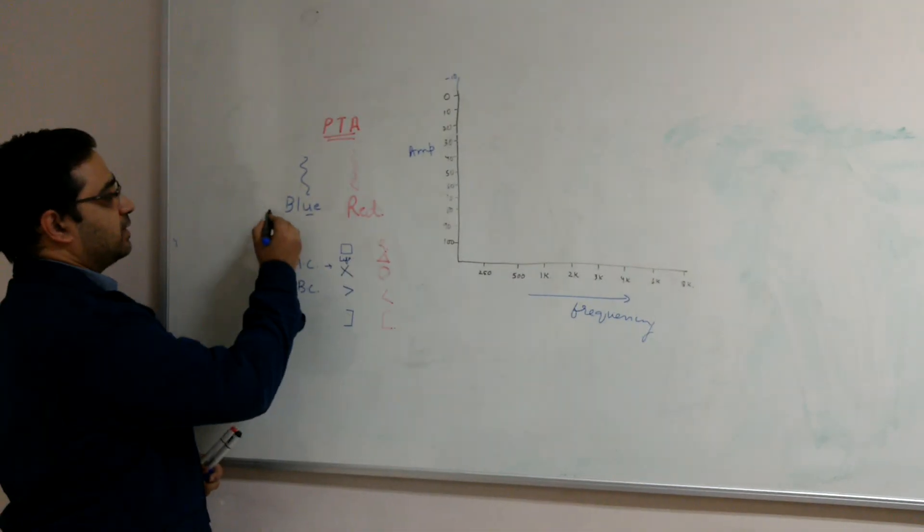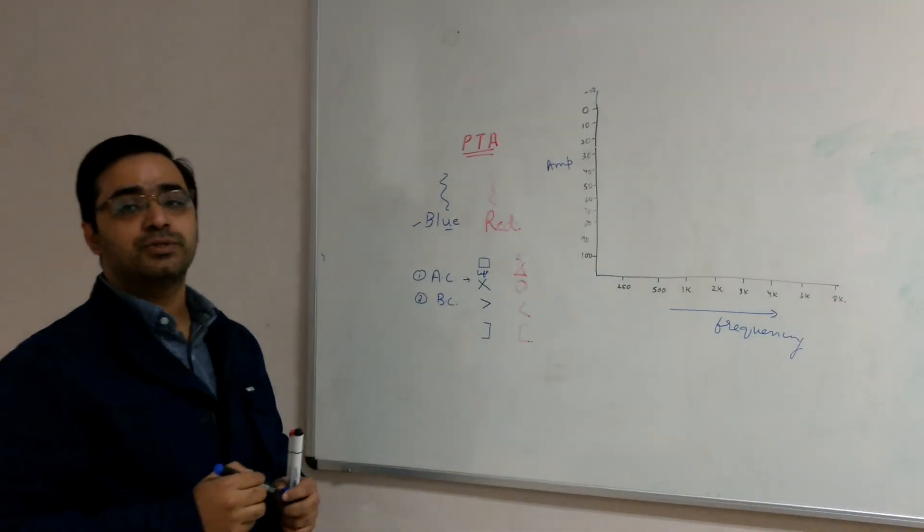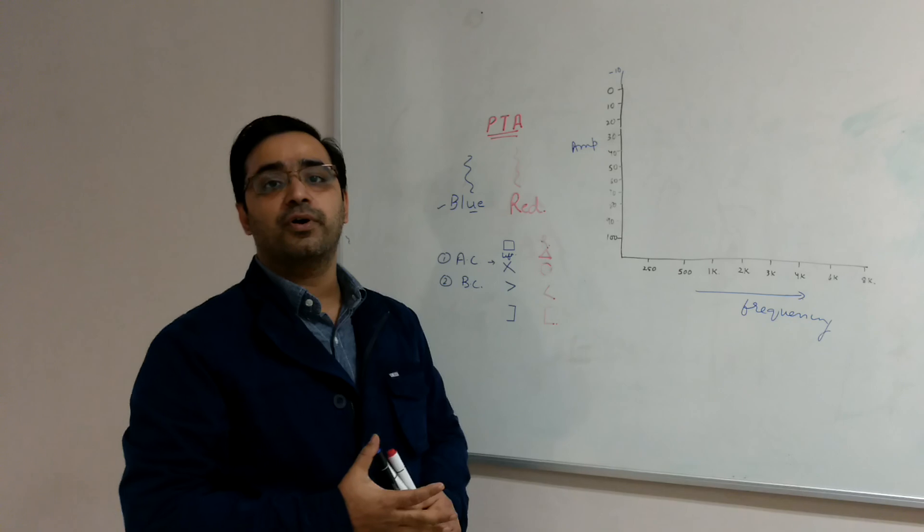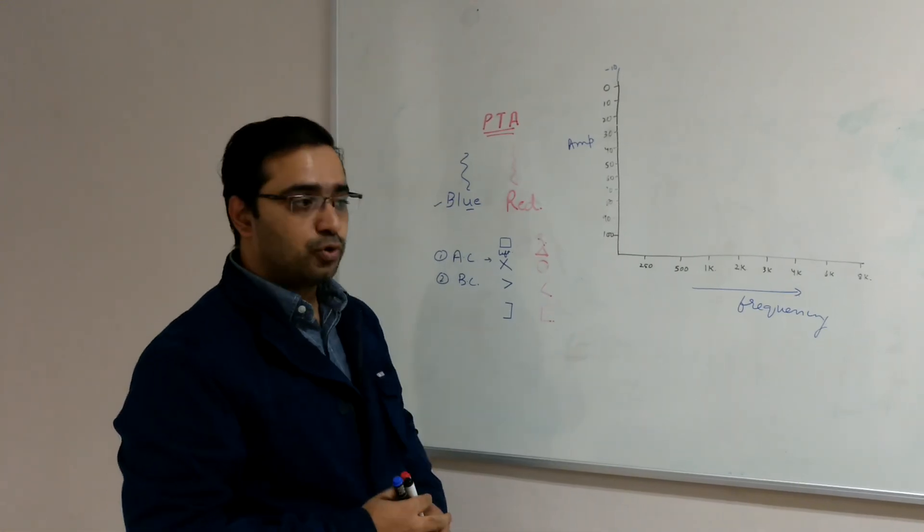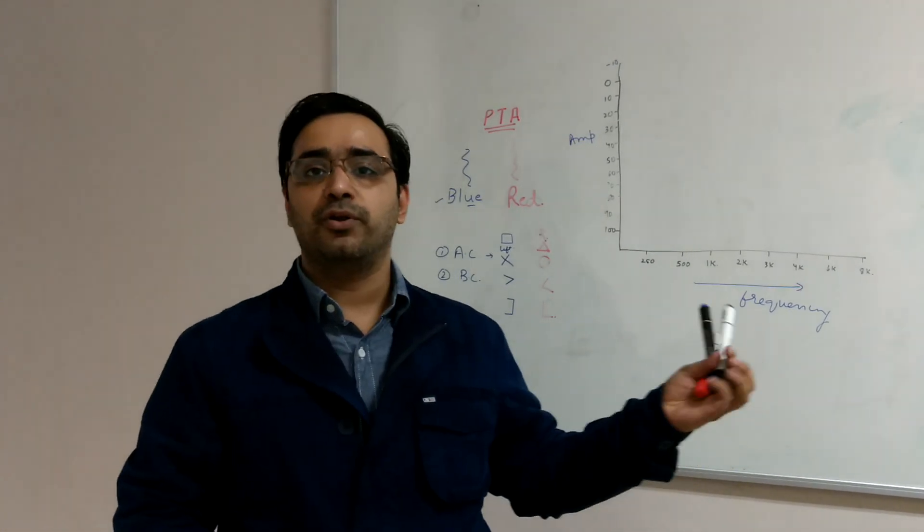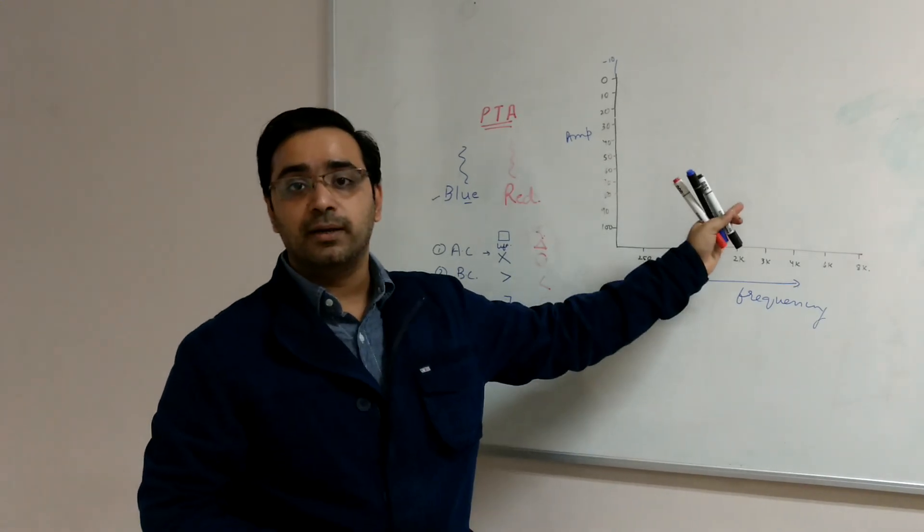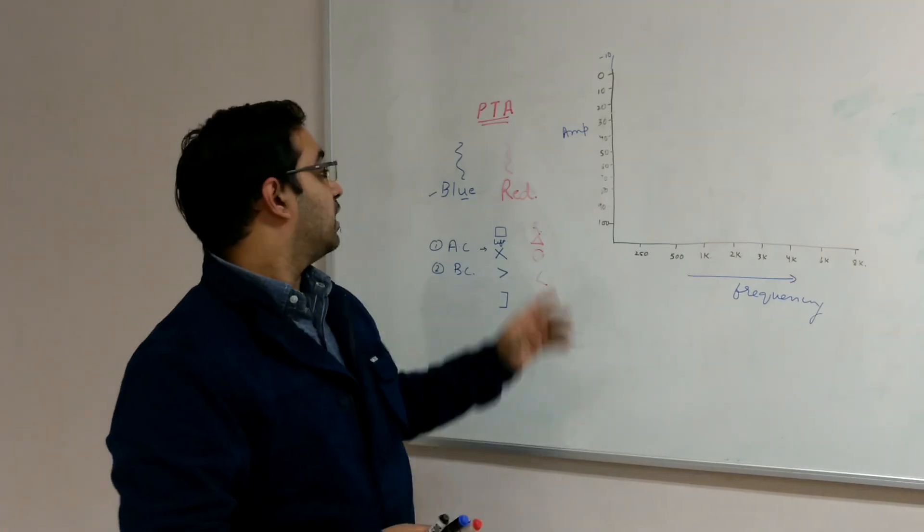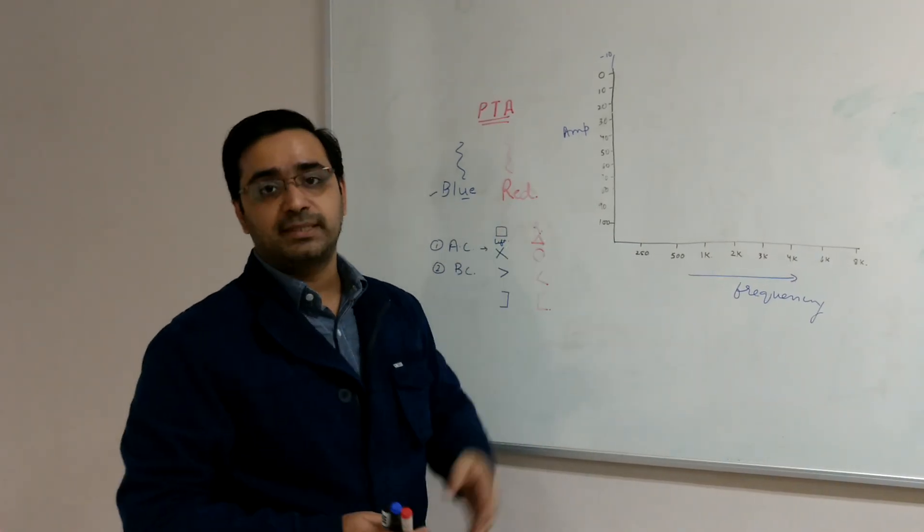First is blue. Blue is used for left side. Red is used for right side. So if suppose you are given an audiogram in which all the markings are blue in color and they ask which side hearing loss, it is left side hearing loss. If red means right side hearing loss.